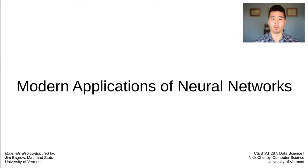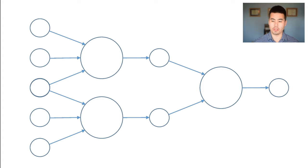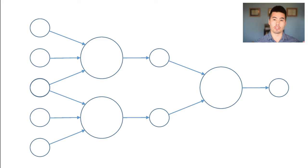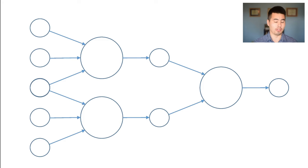Hey team. Welcome back to another Data Science 1 lecture. Today we're going to pick up where we left off last time on neural networks and move from the basic ideas to some more modern applications. Thinking about neural networks as multi-layer perceptrons that take in raw data and increasingly build more complex features on the way to some outputs, we'll look at how those ideas get transformed in other use cases and how we can use them as information processing tools as well as for intermediate feature representations.